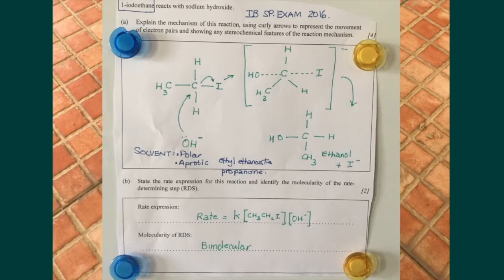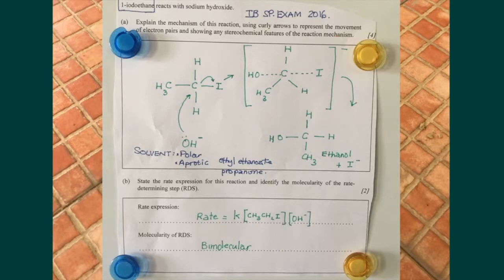This question was taken from the IB specimen exam in 2016. Here you can see the structure of iodoethane with the nucleophile approaching. This is the correct way to draw the transition state: the iodine drawn as a partial bond and the nucleophile approaching 180 degrees away from it, in a straight line, also indicated as a partial bond, with the entire structure in square brackets and a negative charge on the outside. The products are ethanol and the I⁻ ion.